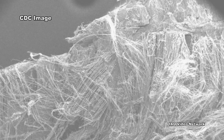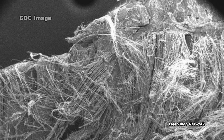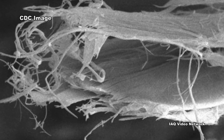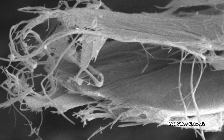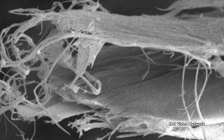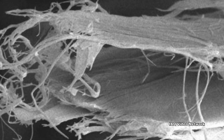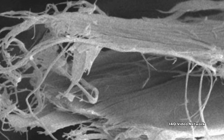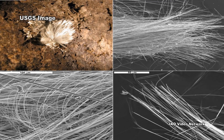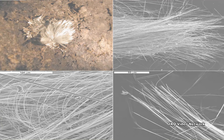Asbestos can be released from ultramafic and serpentine rock if the rock is broken or crushed. People can be exposed to naturally occurring asbestos through routine activities that crush asbestos-containing rock or stir up dust in soils that contain asbestos fibers.